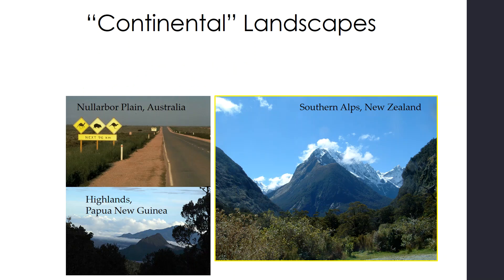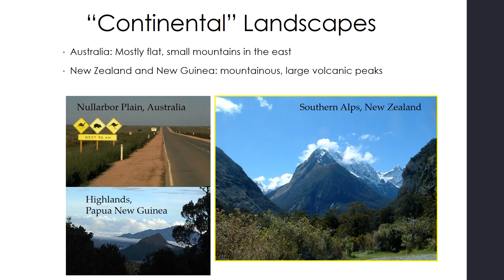The continental landscapes: Australia is again mostly flat with a few small mountains in the east. New Zealand and New Guinea have mountainous, large volcanic peaks.